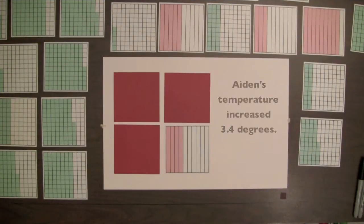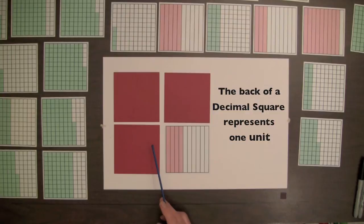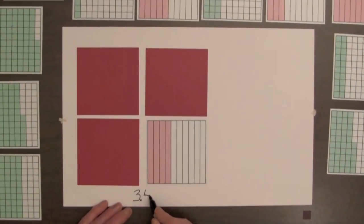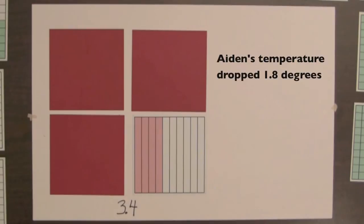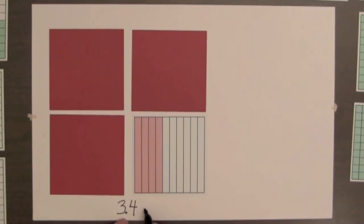Aiden was sick and his temperature increased 3.4 degrees. The back of a decimal square for tenths will represent one unit — one degree — so these squares represent three units and four tenths, the increase in degrees of Aiden's temperature. Overnight, Aiden's temperature dropped one and eight tenths degrees. How much above normal is his temperature now? We need to compute 3.4 minus 1.8.